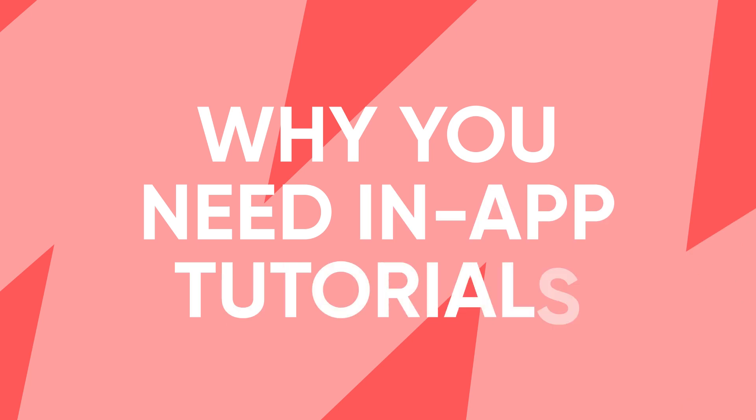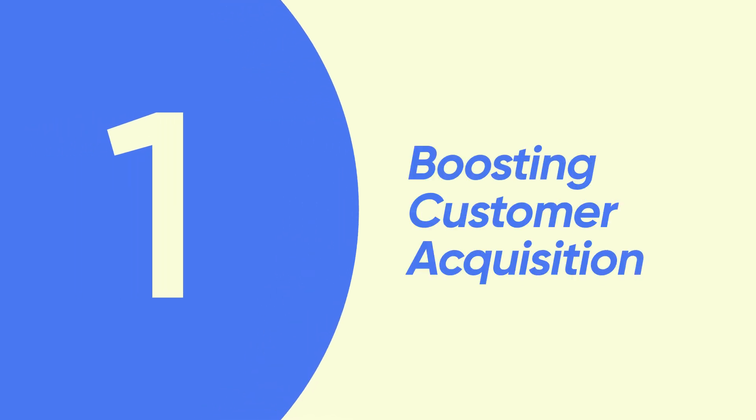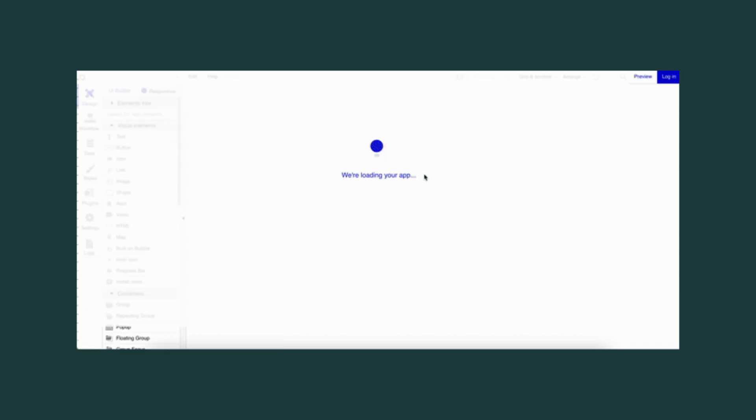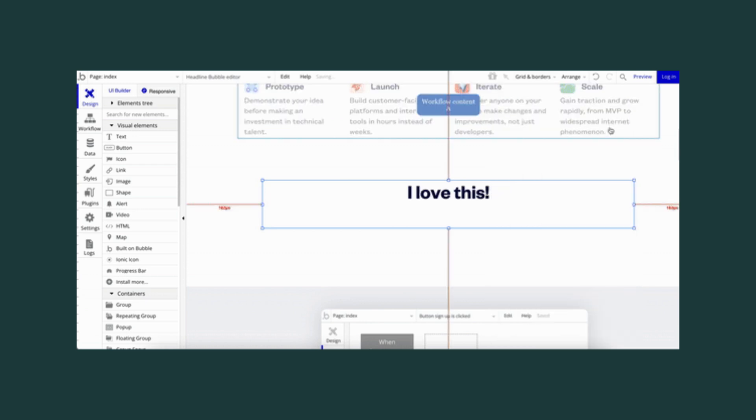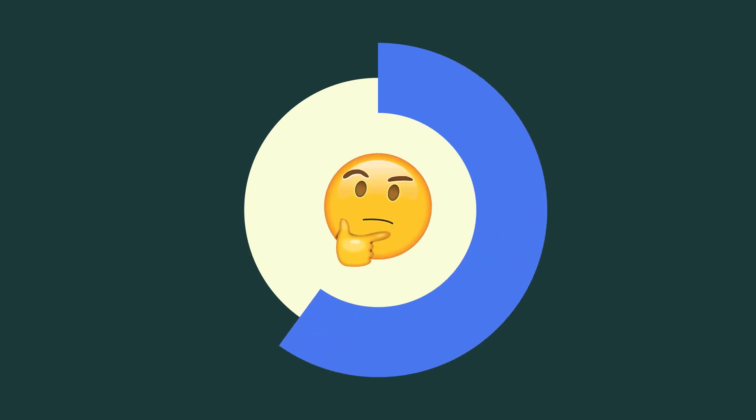That is essentially why an in-app tutorial matters — it is key to retention. But let's take a look at all the reasons why you need one. First, boosting customer acquisition. We all prefer to give the free trial a try first, and if I can try a product without signing up, that's even better. Take Bubble, for instance — they offer a demo environment right on their website, allowing potential customers to experience key features without even signing up. Notably, 63% of customers consider the quality of onboarding before subscribing or purchasing. So with good in-app tutorials and little to no friction, Bubble boosts acquisition.